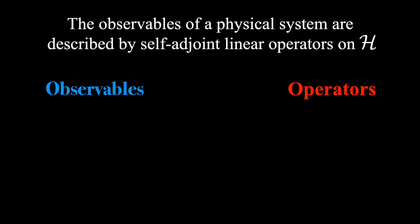To start off, I'd like to remind you that one of the axioms of quantum mechanics is that the observables of a physical system are described by self-adjoint linear operators on a Hilbert space. And remember, observables are any physical property that can be measured.